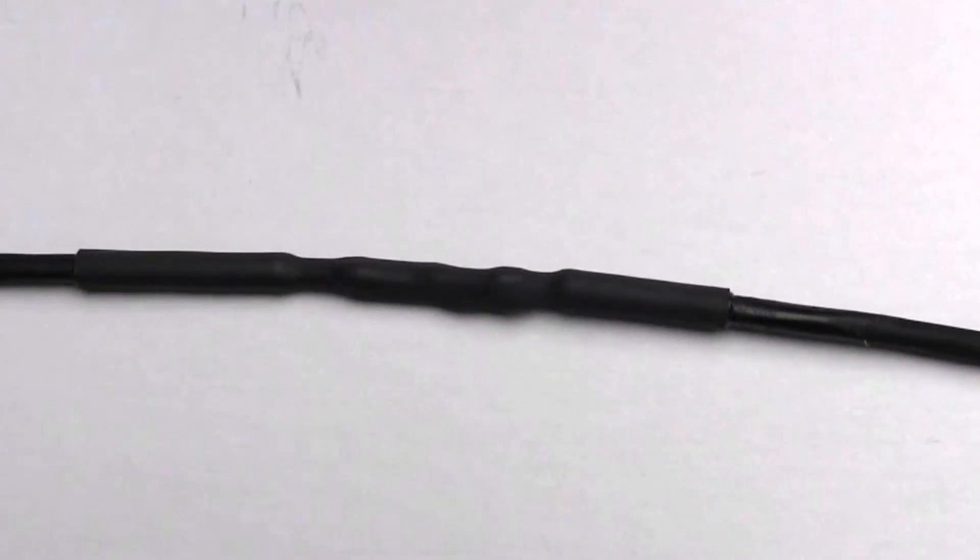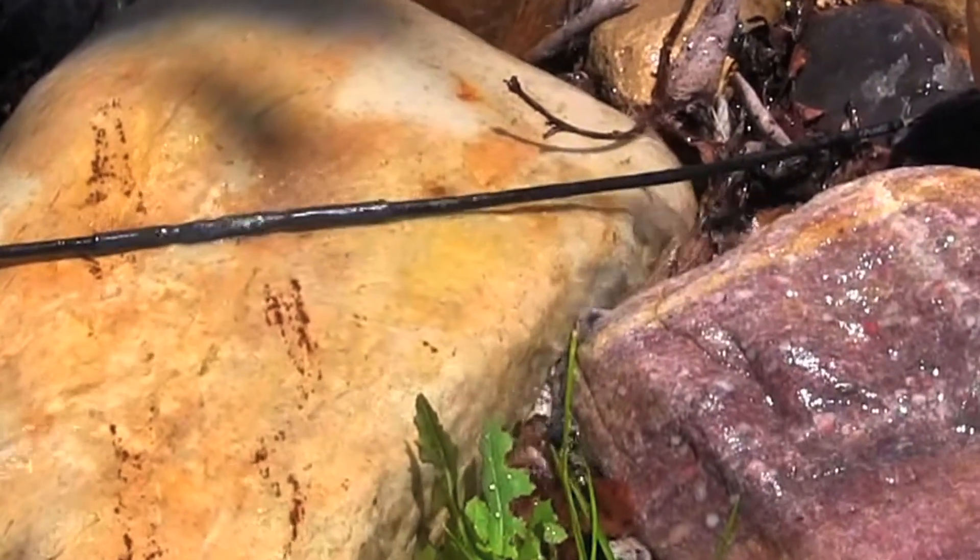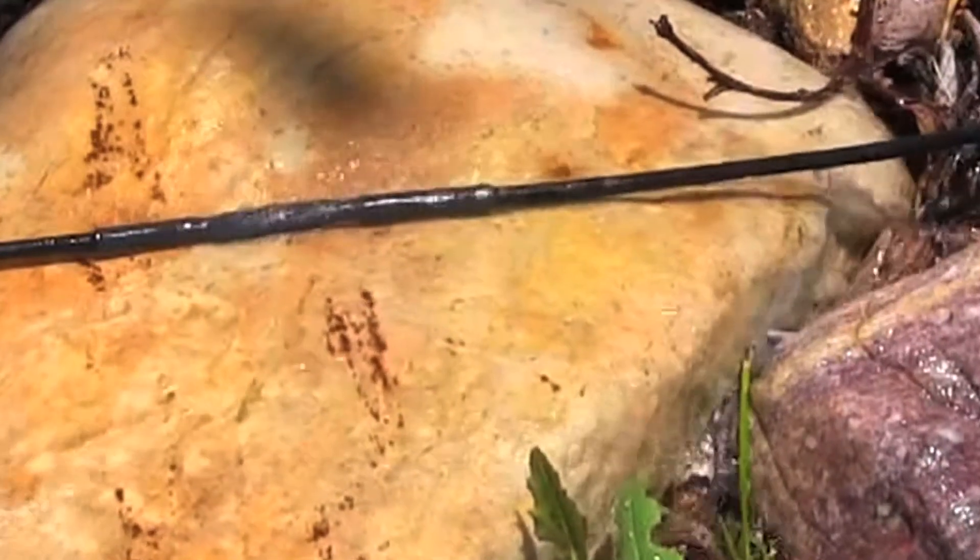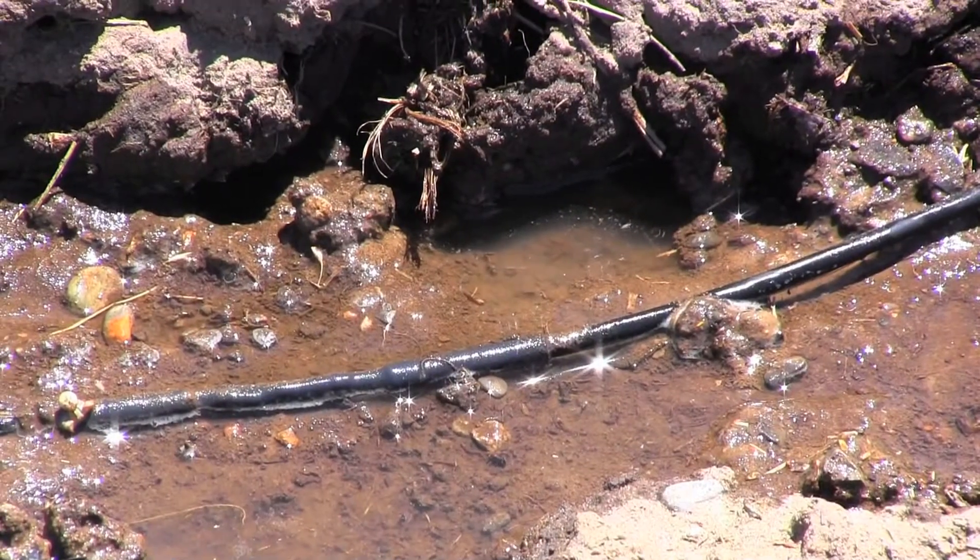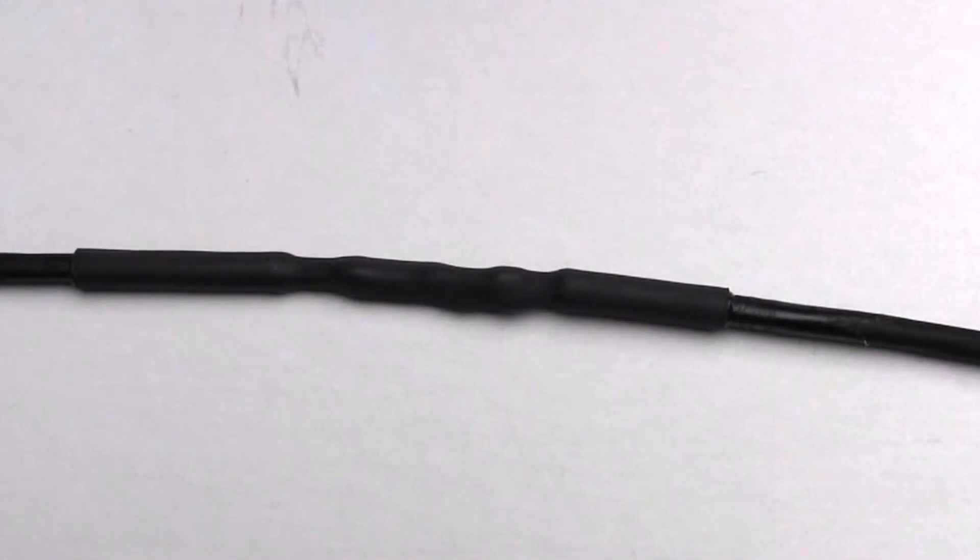When done properly, a cable splice can be just as weatherproof as the jacket itself. In fact, we use Adem brand heat shrink and have conducted tests showing that it's at least as impermeable to water ingress as the cable's Santoprene jacket. Unless otherwise noted, adhesive lined heat shrink has a difficult time adhering to Teflon cable.